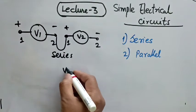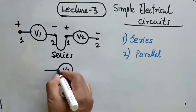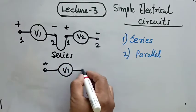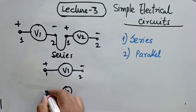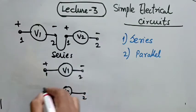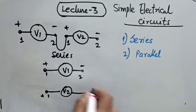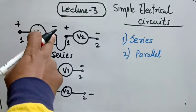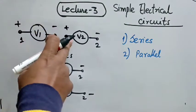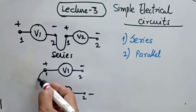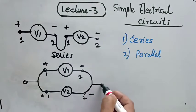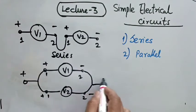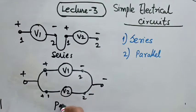Similarly, if the same voltage source V1 is taken with plus and minus, and the second voltage source V2 with terminals 1 and 2, instead of connecting the terminals in series, if we connect the positives of each terminal together and the negatives of both terminals together, this becomes a parallel voltage source.